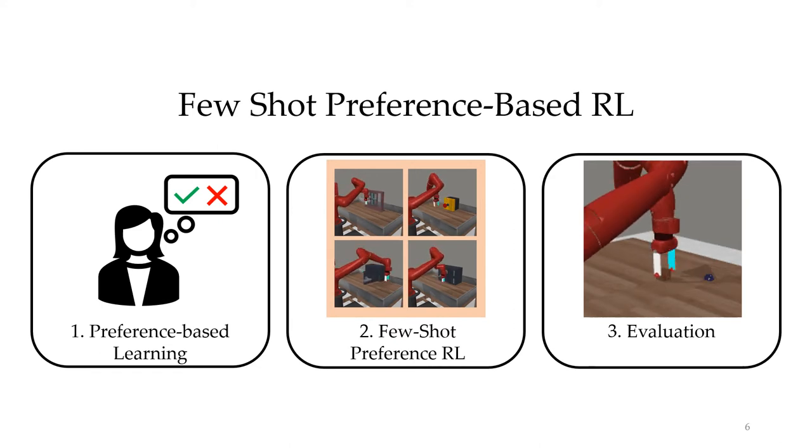First, I'll overview preference-based learning and how it can be used to teach robots. Then I'll introduce our method for few-shot preference-based reinforcement learning. And finally, I'll empirically demonstrate that our method drastically reduces the number of human preferences needed to train policies.